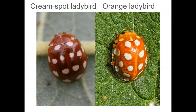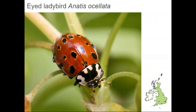The orange ladybird and cream-spot ladybird can be confused because sometimes the orange ladybird is rather darker and the cream-spot can be almost quite orangey. The easiest way to tell them apart is by the spot patterning: the cream-spot ladybird has a row of six spots fairly near the front all in more or less a straight line, whereas the orange ladybird doesn't have that. Generally speaking, the orange ladybird is much more bright orange in colour.